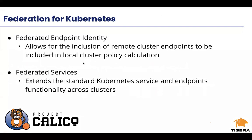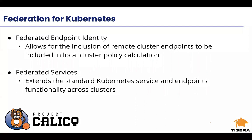Federation for Kubernetes is built upon two additional capabilities. First, federated endpoint identity, which allows remote cluster endpoints to be included in local cluster policy calculation. You can take a set of Kubernetes clusters, set up federated endpoint identity, and they subscribe to each other via the Kubernetes API — all aware of the endpoints deployed across the federation. Then we also have federated services, which extends the standard Kubernetes service and endpoints functionality across clusters. If you run kubectl get endpoints for a federated service name, you'll see IP addresses not just from a single cluster, but from all clusters in the federation.